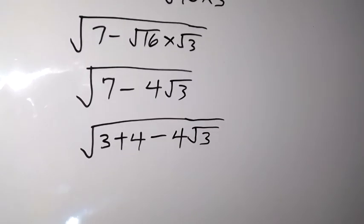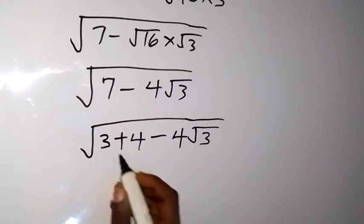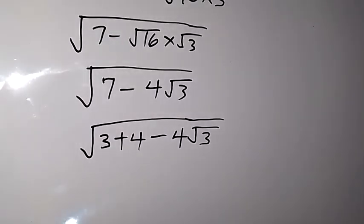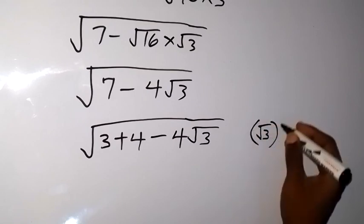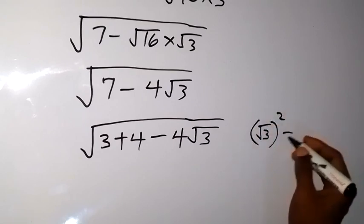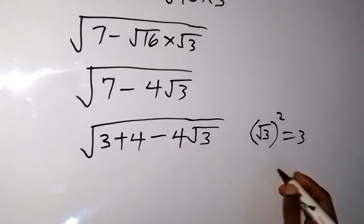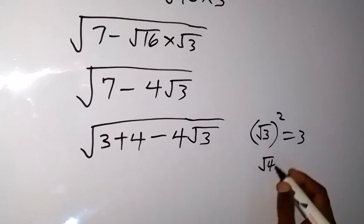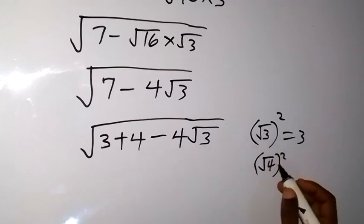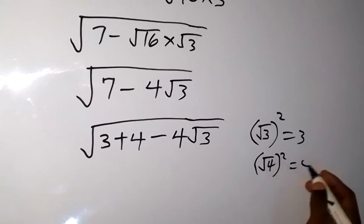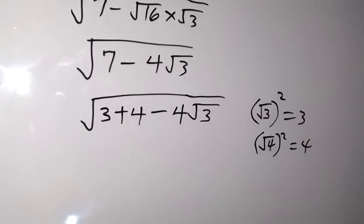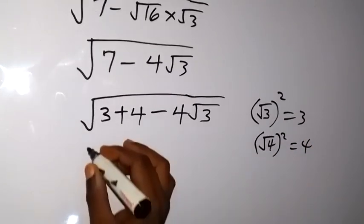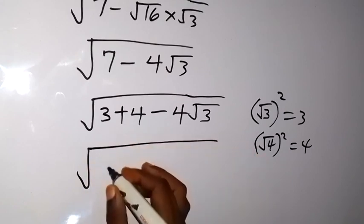Then also we introduce something here. Like, if I have root 3 squared, it's the same thing as 3. Similarly, if I have root 4 squared, the same thing as having 4, because here square cancels square root. So I want to replace 3 as root 3 squared and 4 as well the same way. So we have root